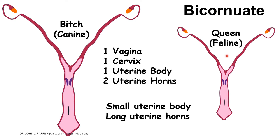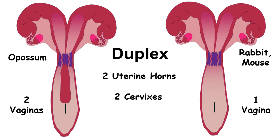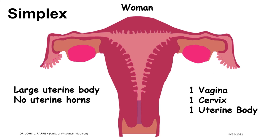These animal species are polytocous. Another uterine type is the duplex, exemplified by the opossum, a marsupial, and the rabbit and mouse. The duplex uterus has two uterine horns, two cervices, and two vaginas in the opossum, or two uterine horns, two cervices, and one vagina in the rabbit and mouse. The simplex uterus is seen in primates, especially humans, where complete fusion of the paramesonephric ducts forms a single uterine body with no uterine horns — one vagina, one cervix, one uterine body.